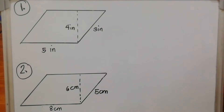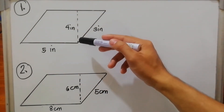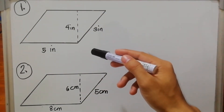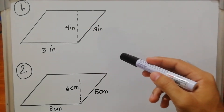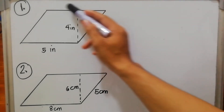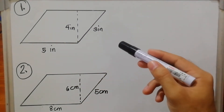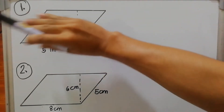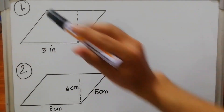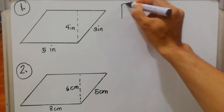Perimeter means the distance around the plane figure, and area means the surface enclosed by the figure. In Filipino: yung perimeter ay yung haba ng sides paikot, at yung area ay yung pwede mong ilagay sa loob. Let's solve the perimeter.